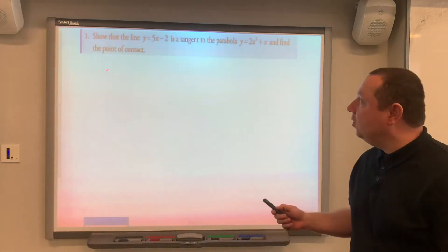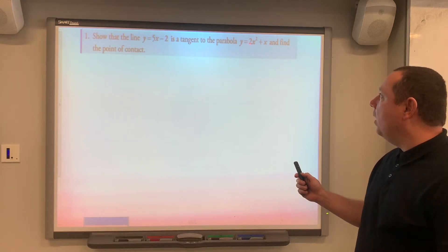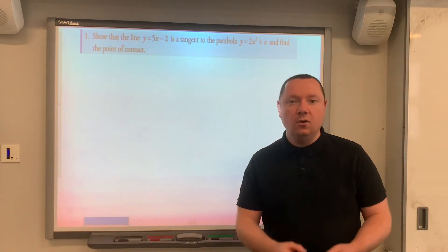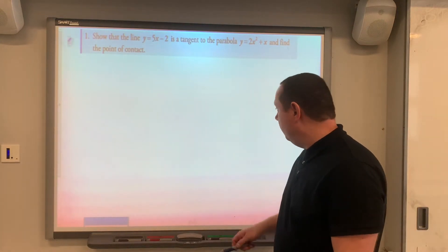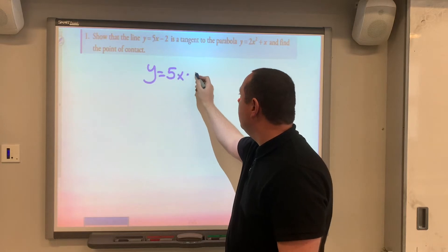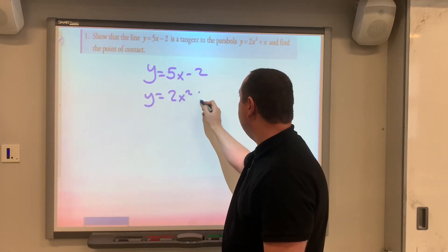Example one from the SQA notes: show that the line y equals 5x minus 2 is a tangent to the parabola y equals 2x squared plus x and find the point of contact. So step one is to solve the equations simultaneously. So the first equation we've got is y equals 5x minus 2, and the other equation is y equals 2x squared plus x.